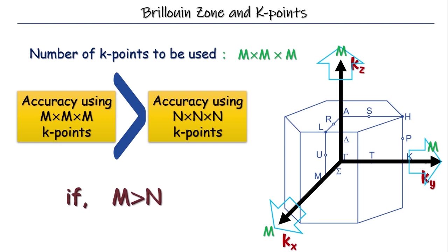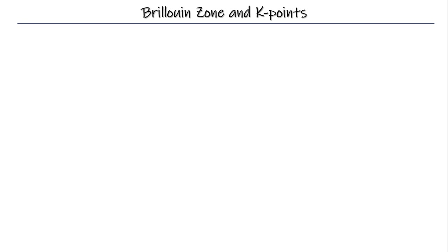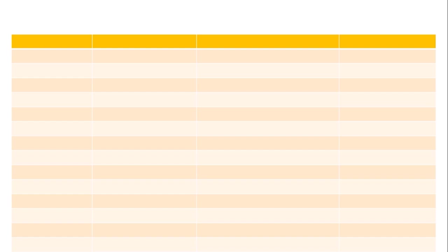Then, the question becomes in practice, how many K-points should we choose? Okay. Here we are going to present a table of results from computing the total energy of FCC copper with M cross M cross M K-points generated using Monkhorst-Pack method.